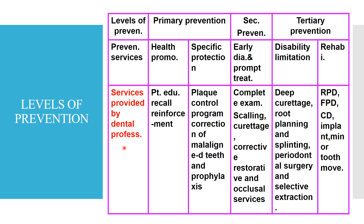Services provided by dental professionals: under primary prevention and oral health promotion, patient education, recall and reinforcement. Specific protection includes plaque control, correction of malaligned teeth, and proper oral prophylaxis. Secondary prevention includes complete examination, scaling, curettage, corrective, restorative, and occlusal services done by dentists. Tertiary prevention for existing periodontitis includes deep curettage, root planing, splinting, periodontal surgery, and selective extraction. Rehabilitation involves RPD, FPD, and complete dentures to reconstruct lost teeth.